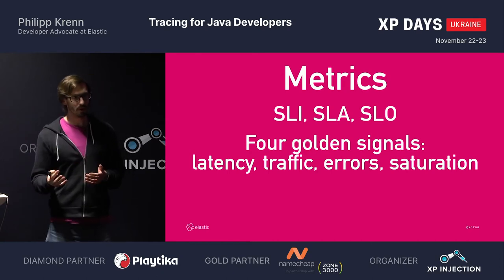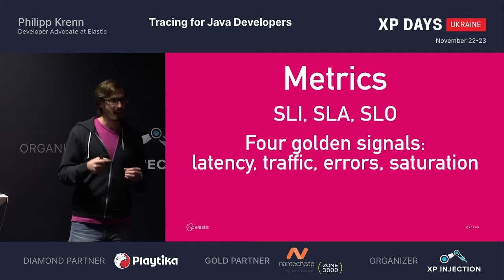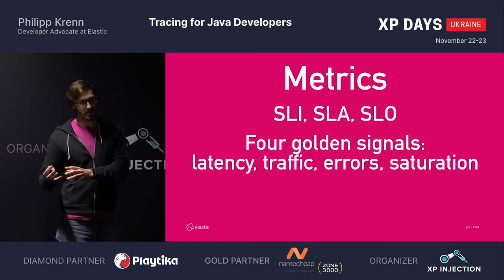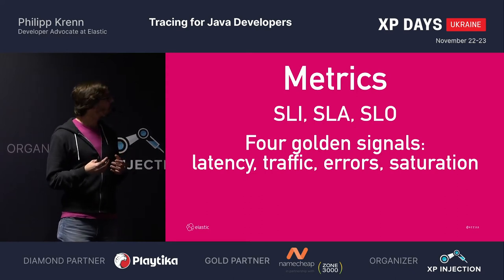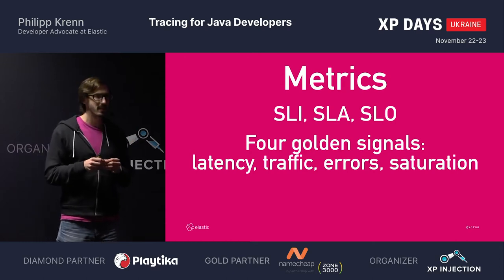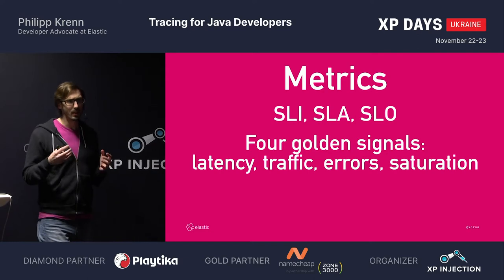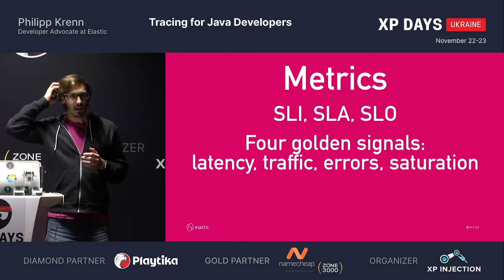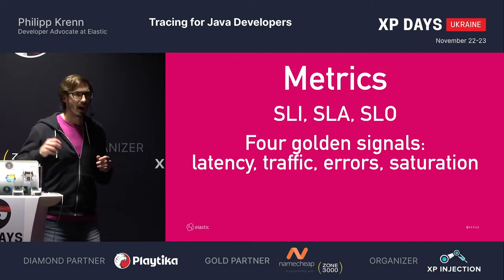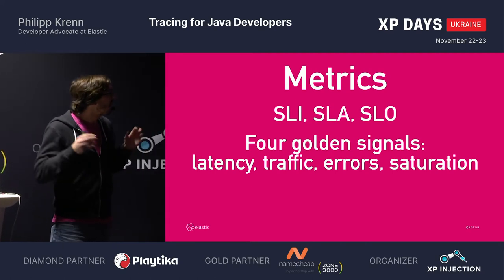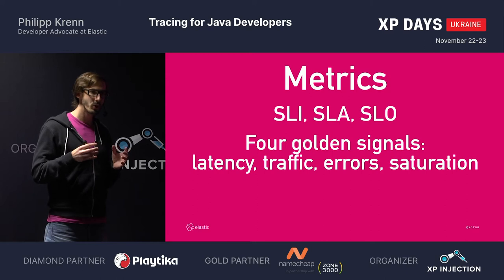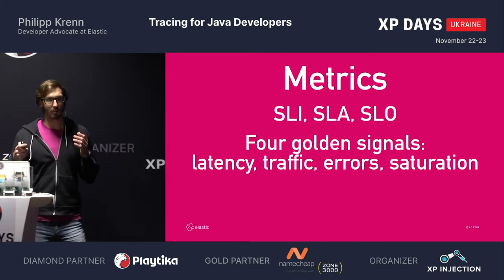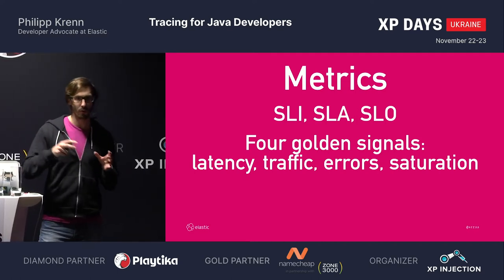The agreement is what you guarantee to others, and the objective is what you plan to do. You have these numbers and then you try to figure out what you want to reach and what you guarantee towards others. Google also has the four golden signals: latency — how long are people waiting; traffic — how busy is your service; error rate; and saturation — how high is the utilization. You want to tie your numbers more to your application to see what's actually happening — that's what you get out of metrics.